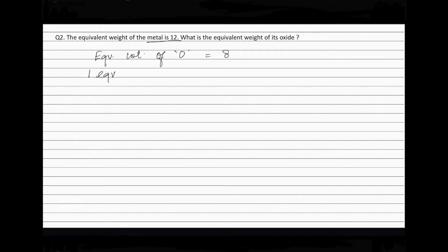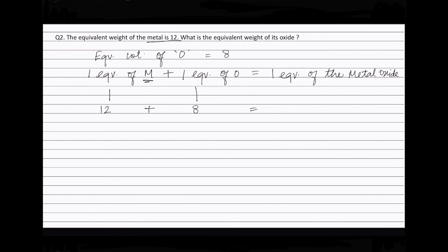One equivalent of metal (M) combines with one equivalent of oxygen to form one equivalent of the metal oxide. One equivalent of metal is 12, one equivalent of oxygen is 8. Therefore, one equivalent of metal oxide will be 12 plus 8, that is 20. Therefore, equivalent weight of metal oxide is equal to 20.